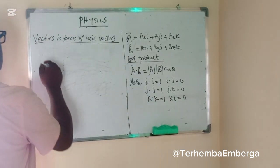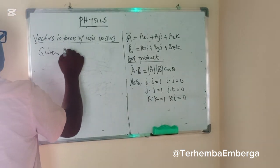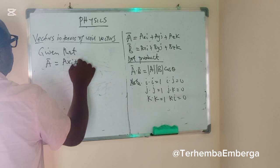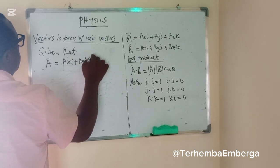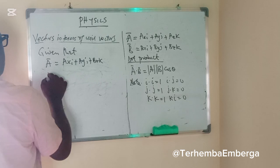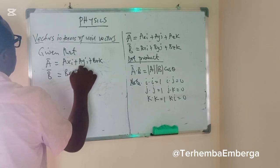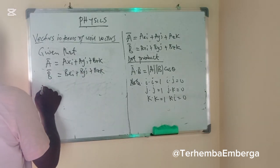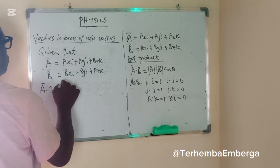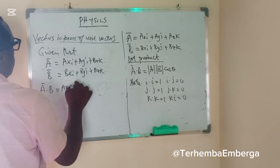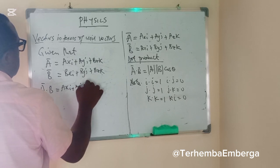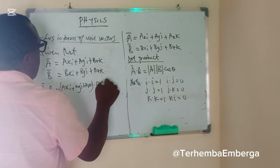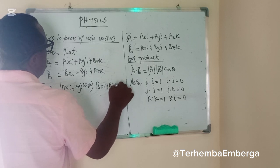Given that A is AXI plus AYJ plus AZK, and vector B is given as BXI plus BYJ plus BZK, this implies that A dot B will be equal to AXI plus AYJ plus AZK dot BXI plus BYJ plus BZK.